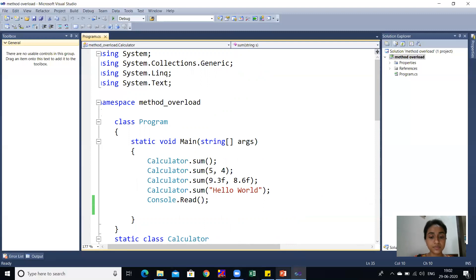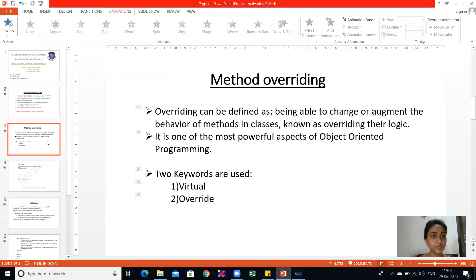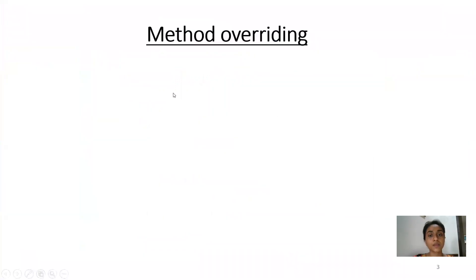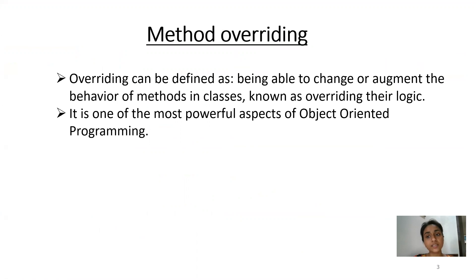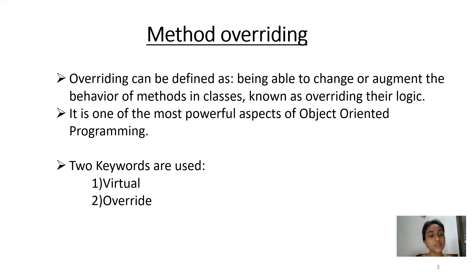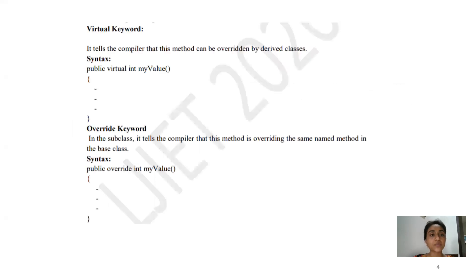Next topic is method overriding. Overriding can be defined as being able to change or augment the behavior of methods in a class, which is known as overriding their logic. It is one of the most powerful aspects of object-oriented programming. Two keywords are used: virtual and override. In the syntax, we write the virtual keyword — for example, public virtual int MyValue() — and when overriding this method, we use the override keyword.